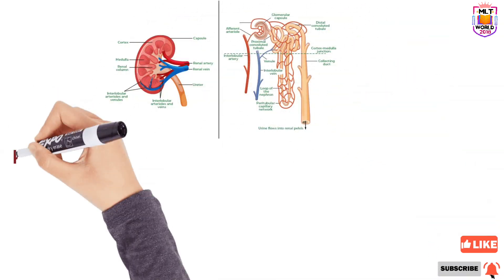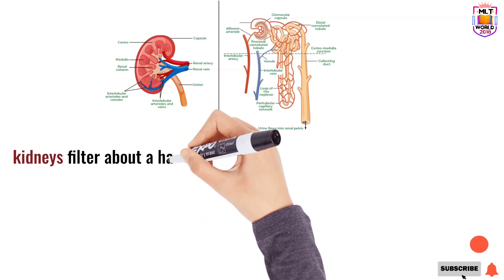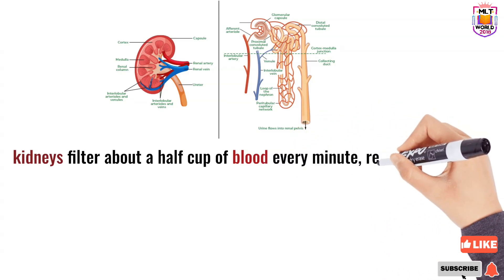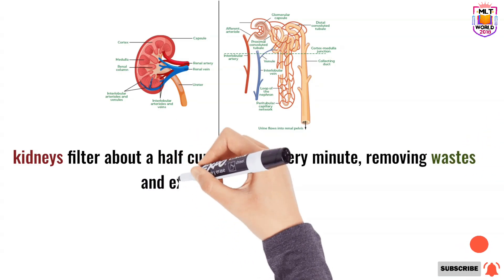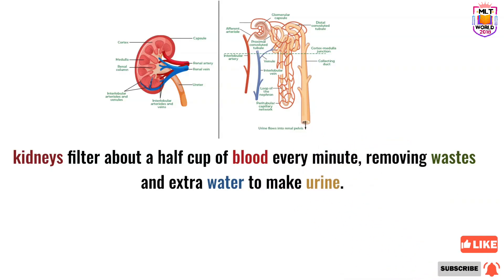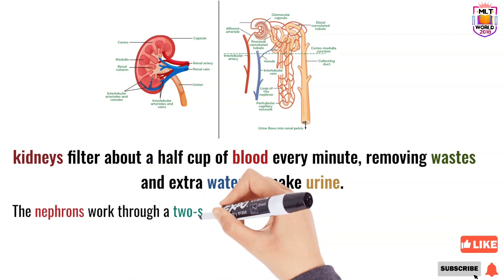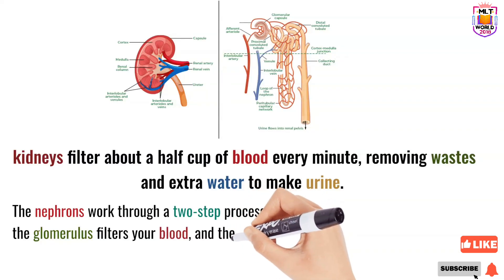To understand the glomerular filtration rate, first we have to understand the kidney, because the kidney filters about half a cup of blood every minute. The main purpose is to remove waste and extra water in the form of urine. The structural and functional unit of kidney is the nephron, with almost 1 to 2 million nephrons present in each kidney, and the nephron works through two steps.